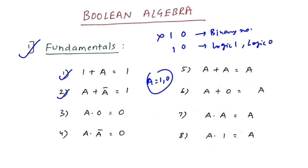Point two: A + Ā = 1, where Ā means the complement of the variable A. You can verify: 1+0 = 1 and 0+1 = 1. The answer is always one.